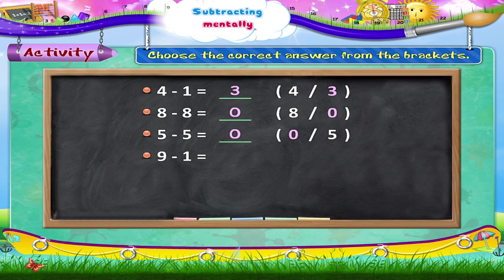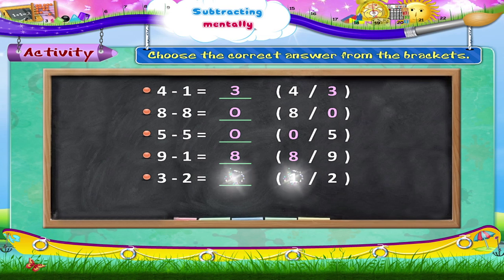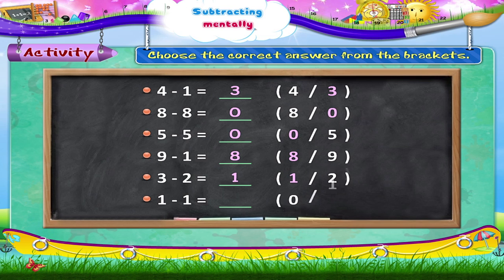9 minus 1 equals dash — 8 or 9? 9 minus 1 equals 8. 3 minus 2 equals dash — 1 or 2? 3 minus 2 equals 1. 1 minus 1 equals dash — 0 or 1? 1 minus 1 equals 0.